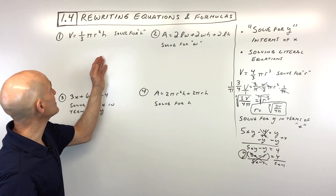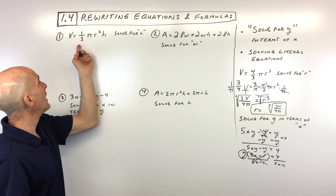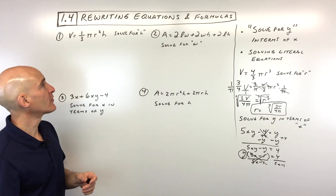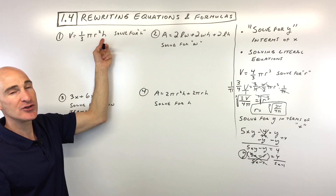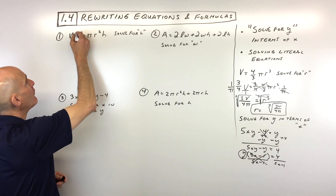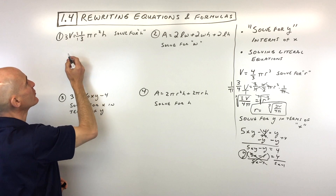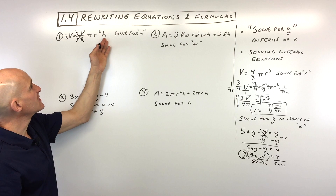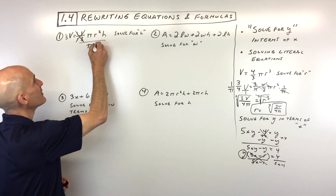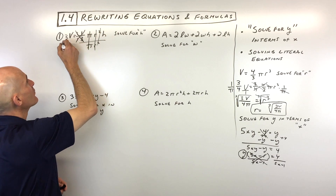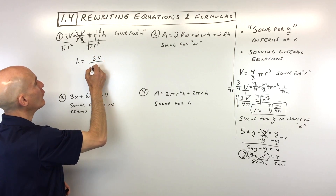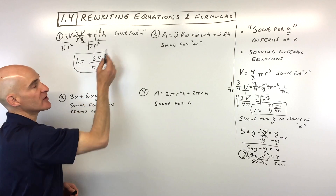Practice example one: Volume equals one-third pi r squared h — solve for h. To isolate h, multiply both sides by the reciprocal of one-third, which is 3, canceling out the one-third. Then divide both sides by pi r squared in one step, since pi r squared is multiplied by h. These cancel out, leaving h by itself. The final result is h equals 3V over pi r squared.